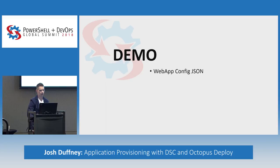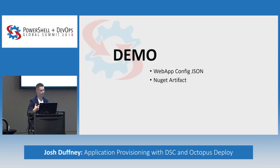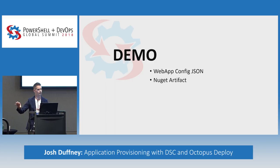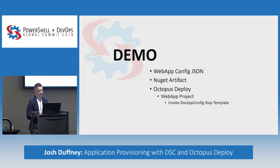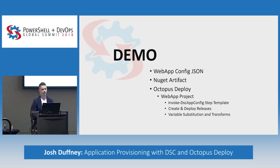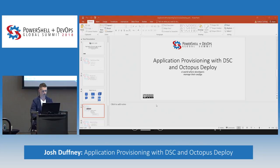Before we jump into the demo, we're going to look at the web app JSON configuration — a DSL abstraction of DSC to make it more friendly for developers. We'll also look inside the NuGet artifact. I'm not going to demo any CI work here, but know that source control gets compiled, tests are run, and a build artifact is generated. Then we'll dive into Octopus Deploy, look at the web app project, the invoke DSC app config step template, and then create and deploy a release, talking about variable substitution you get for free with Octopus.